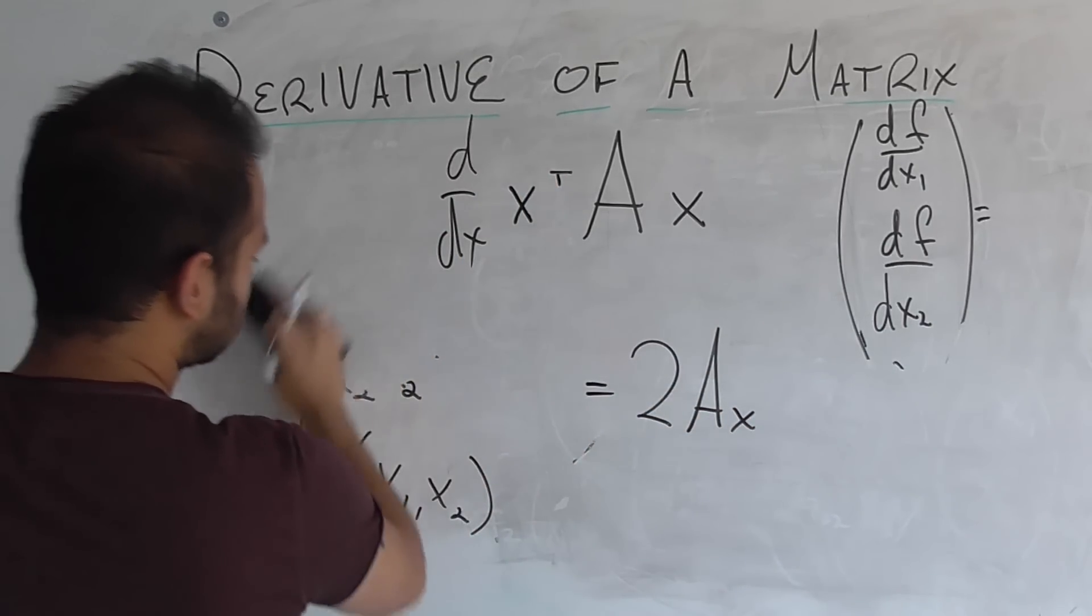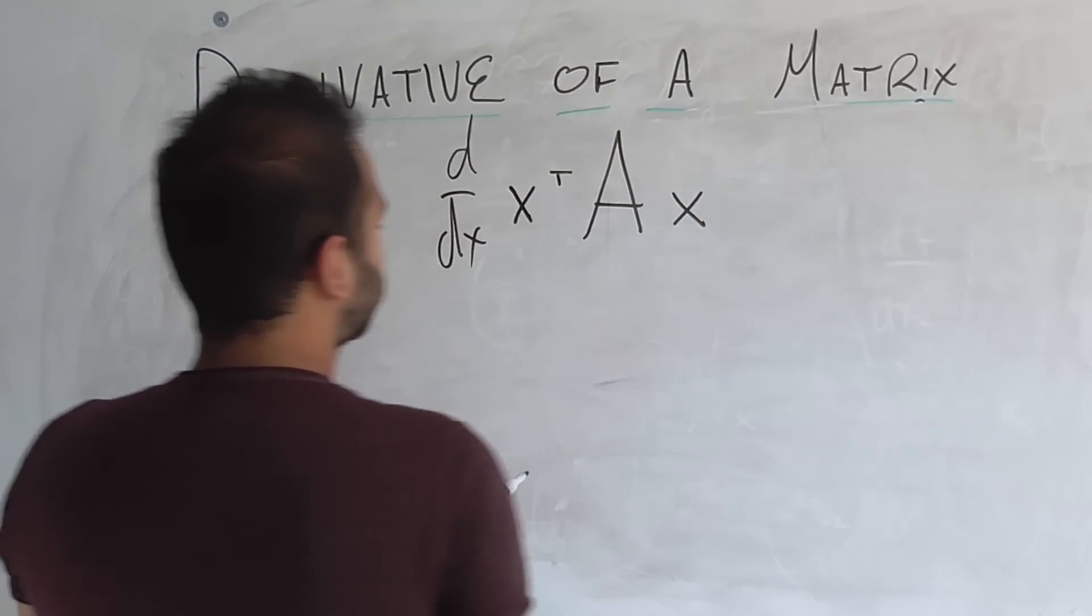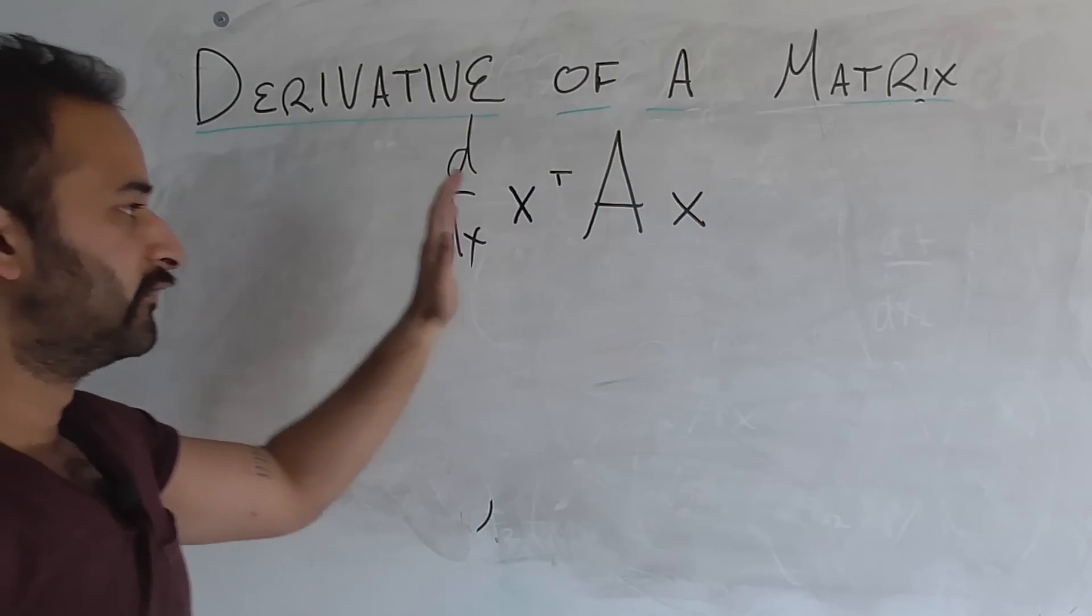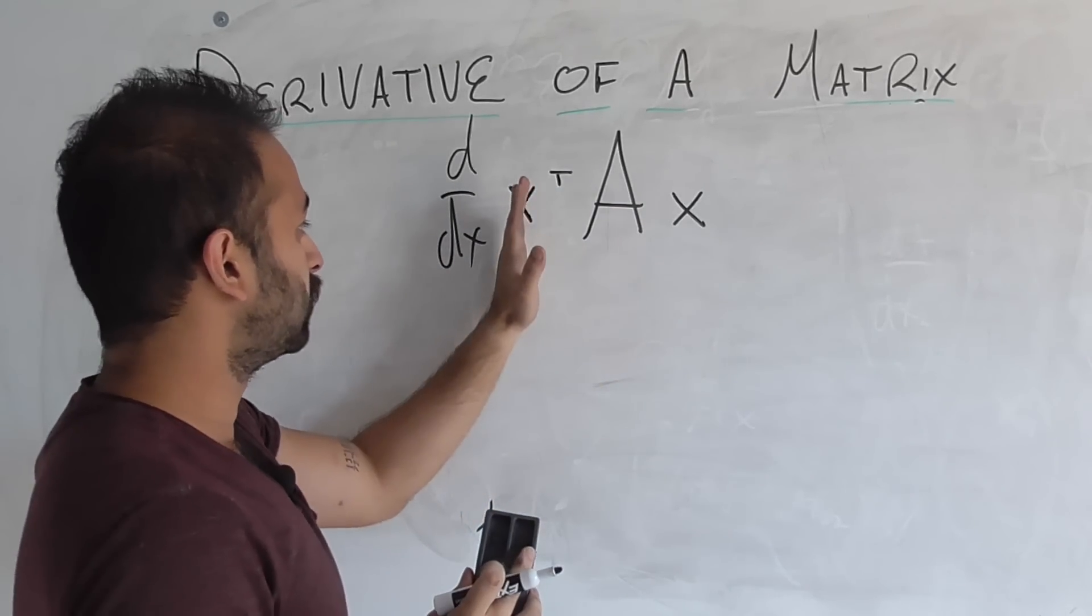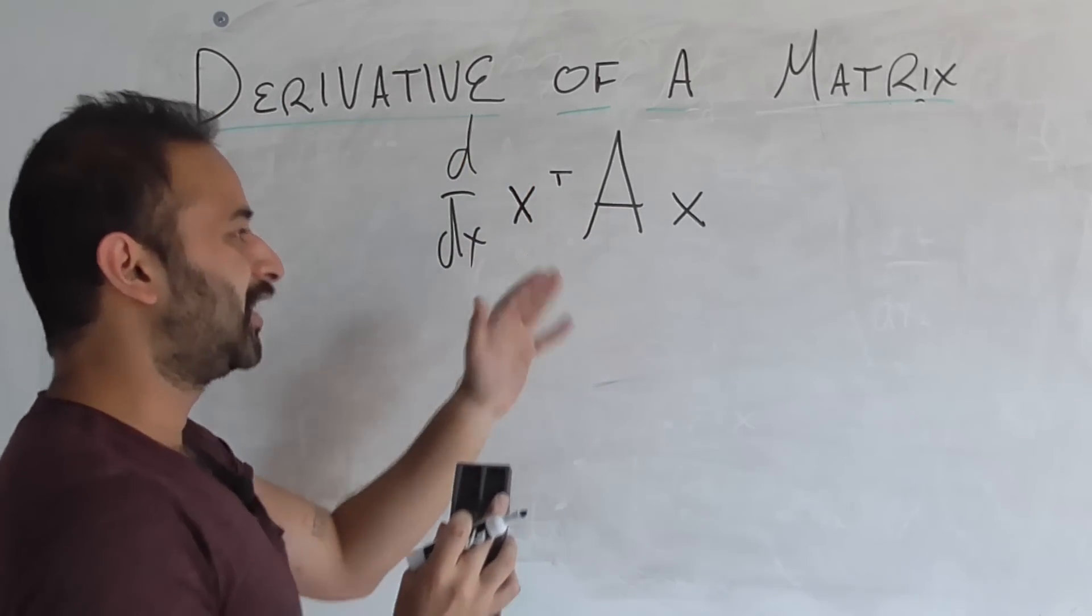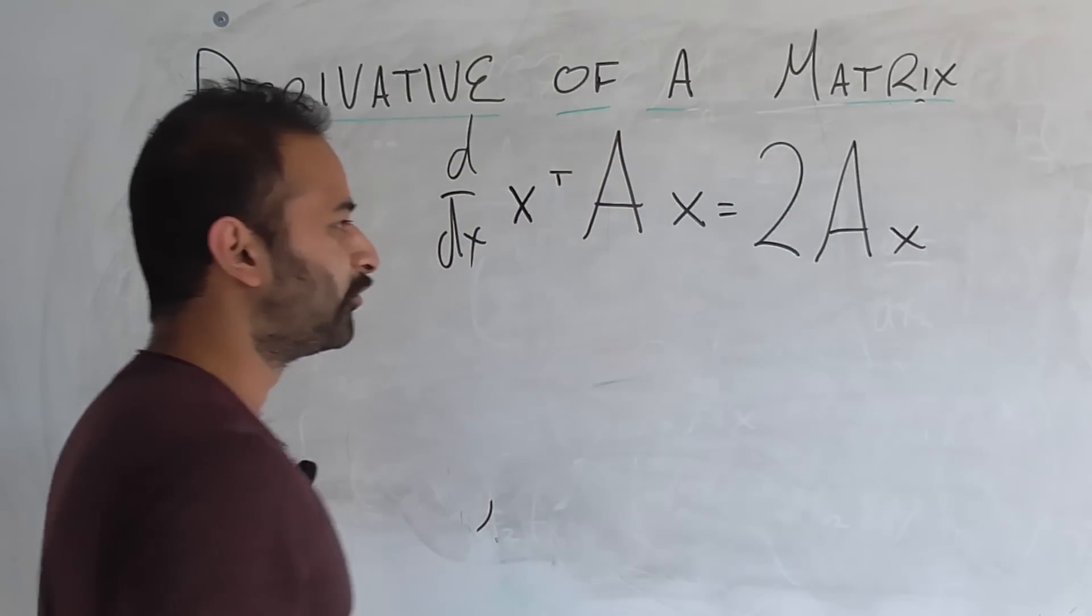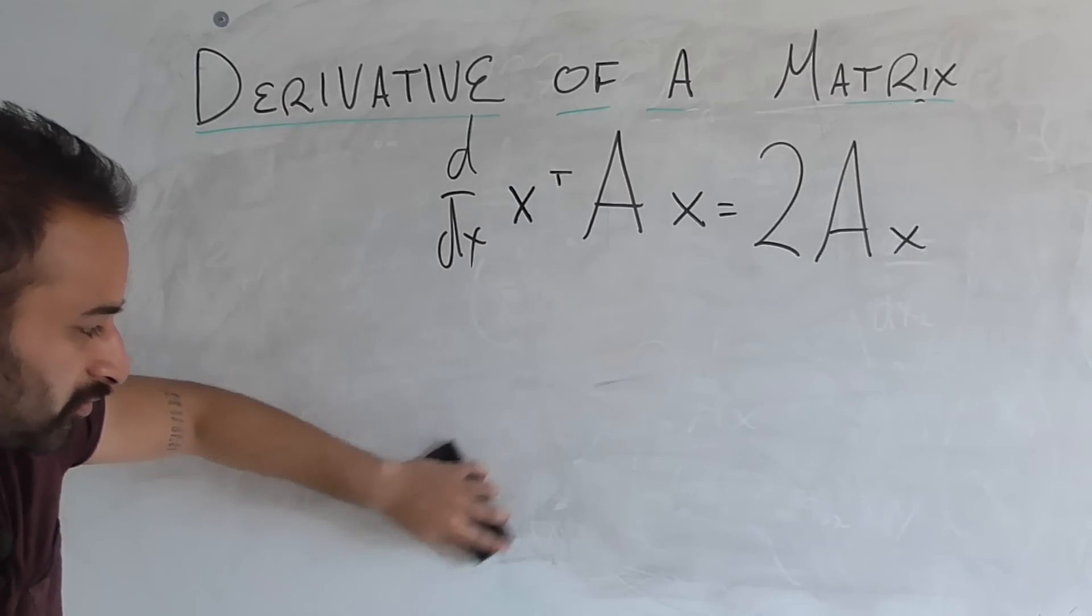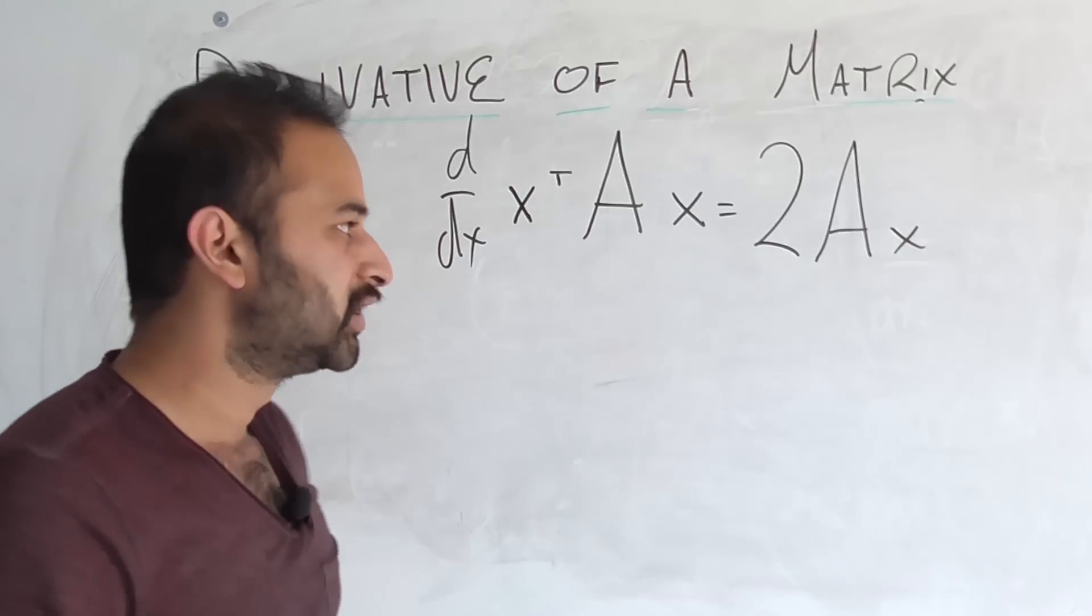Let me get rid of everything else on here, except the result itself. So we found that the derivative with respect to x of this transformation, x transpose Ax is equal to 2Ax. And why is this awesome? This is awesome not only because we're going to use this thing in our principal component analysis and future videos.